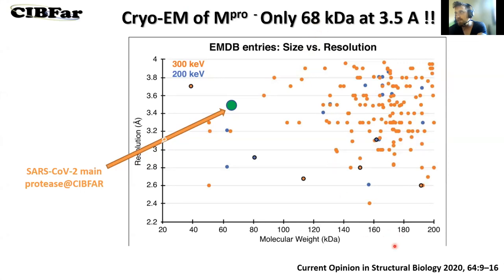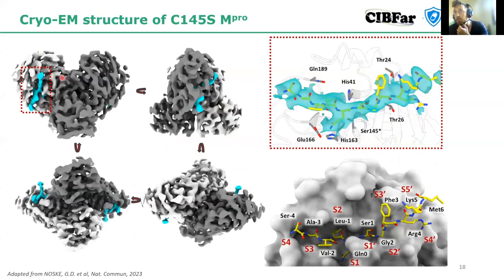Cryo-EM difficulty is inversely proportional to size more or less, and this is one of the smallest proteins ever solved at atomic resolution by cryo-EM. That data is from 2020 so there are certainly more examples now, but it was still very fantastic results.